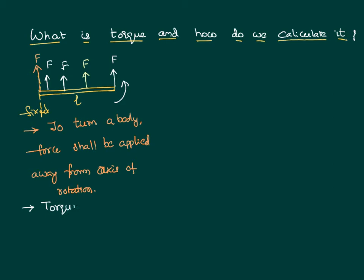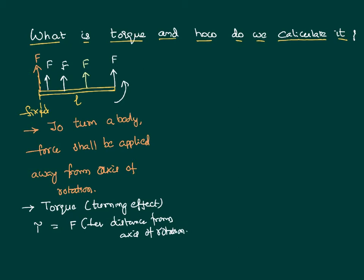We define a term called torque — a Greek word meaning turning effect — shown with the letter tau. Torque is defined as the force applied multiplied by the perpendicular distance from the axis of rotation. So if a rod of length l has a force applied at its end, the torque equals F times l.